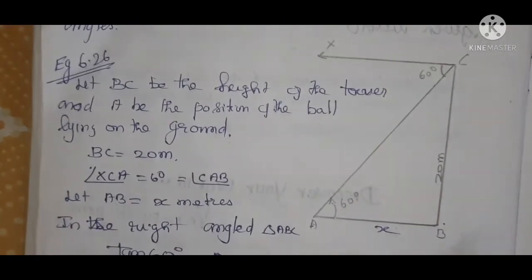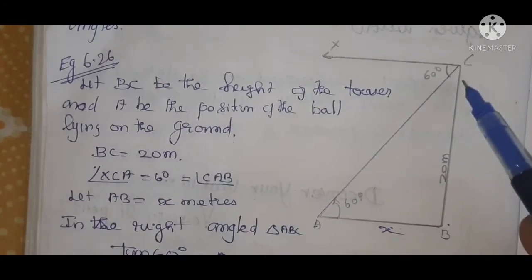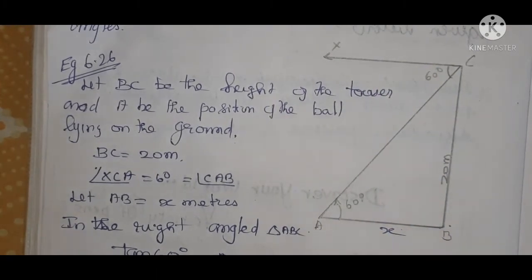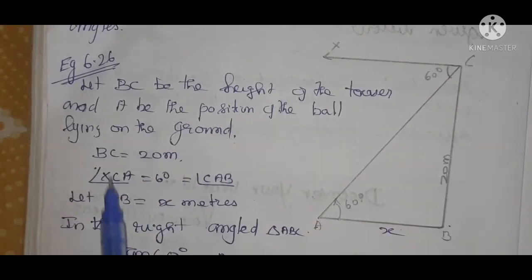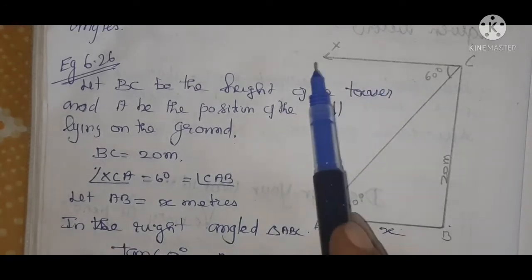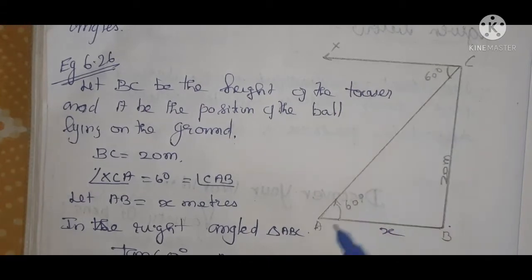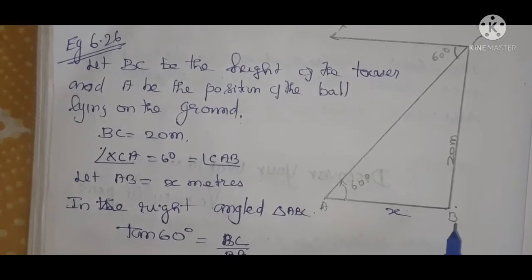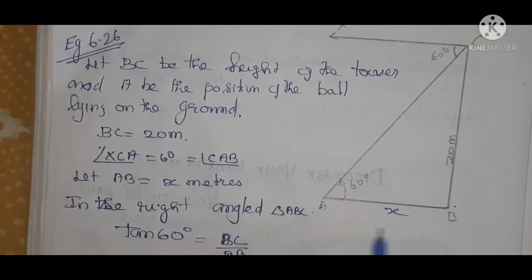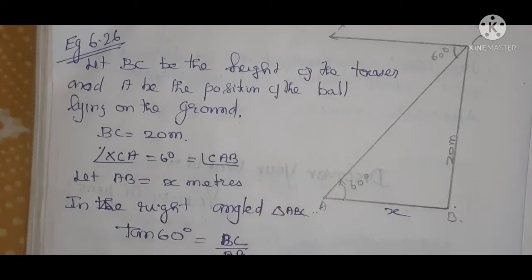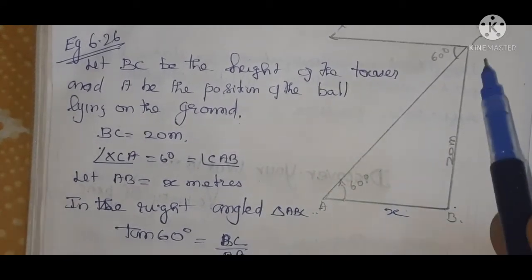AB and CX are parallel lines, so AC is the transversal. Angle XCA and angle CAB are alternate angles and therefore equal. Let BC be the height of the tower and A be the position of the ball lying on the ground. BC is the height of the tower = 20 meters. Angle XCA = 60°, which equals angle CAB. Let AB be the distance between the ball and the tower, taken as x meters. In right-angle triangle ABC, tan 60° = opposite BC divided by adjacent AB.